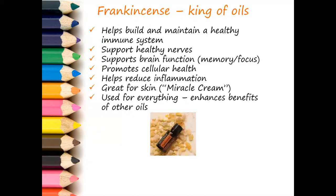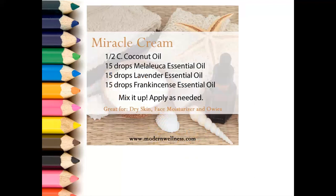Frankincense is the king — the Jesus oil. It helps build and maintain a healthy immune system and is great for everything: your brain, nerves, memory, and cellular health. It helps reduce inflammation, which is huge, especially for kids on inhalers. It's one of the ingredients in the miracle cream and enhances the benefits of all other oils. The miracle cream recipe is: coconut oil with melaleuca, lavender, and frankincense, kept in a little glass jar. It covers everything from dry skin to owies and skin conditions.